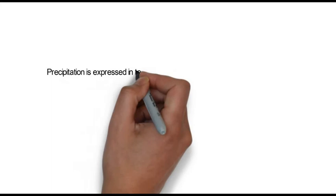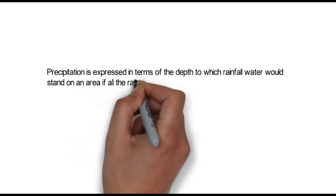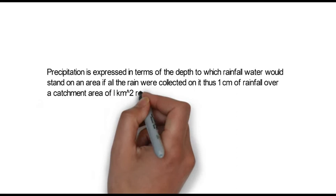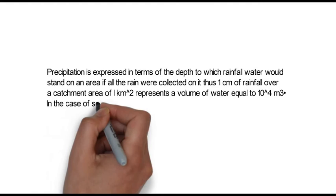Precipitation is expressed in terms of the depth to which rainfall water would stand on an area. If all the rain were collected on it, thus 1 cm of rainfall over a catchment area of 1 km² represents a volume of water equal to 10⁴ meter cube.